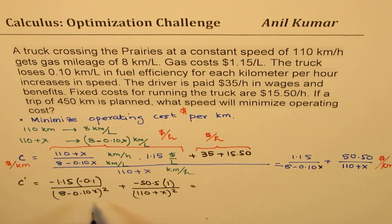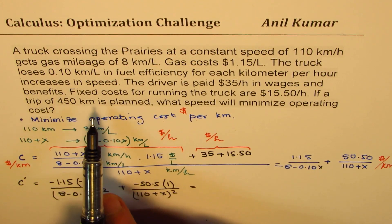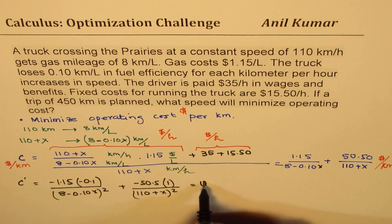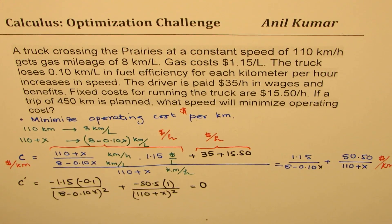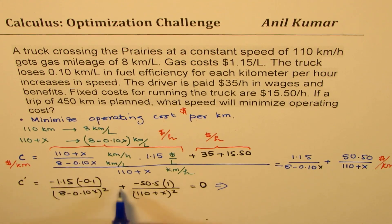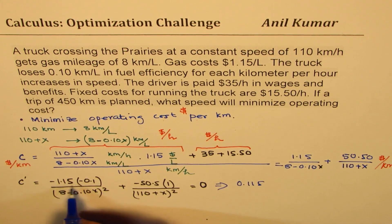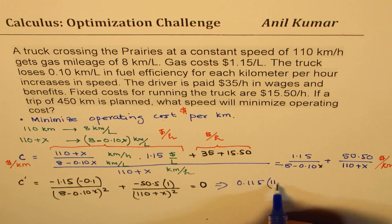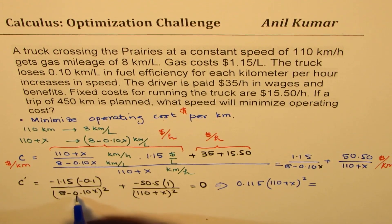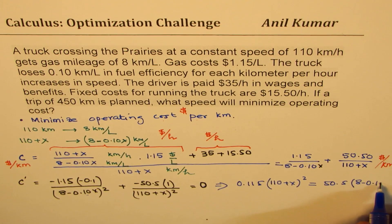To find the minimum, we equate the derivative to zero — meaning the two terms must be equal. Cross-multiplying gives: 0.115 times (110 plus x) squared equals 50.5 times (8 minus 0.1x) squared.